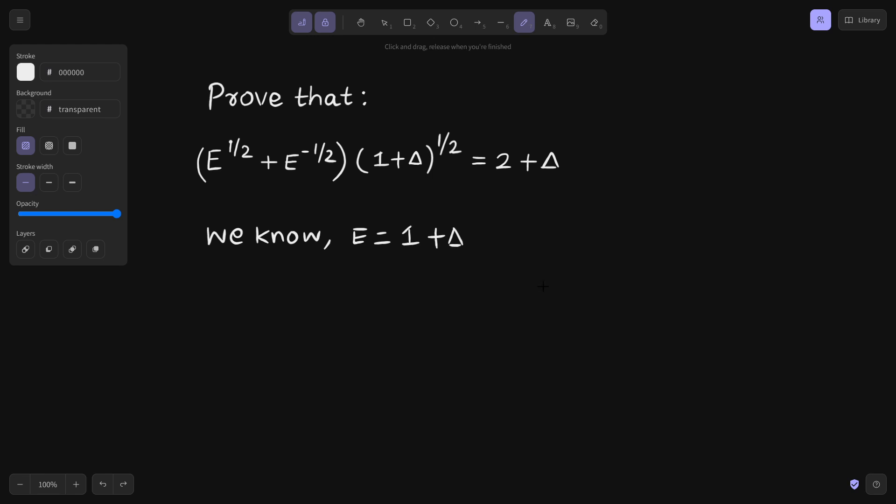So we use this, we can write this as E^(1/2) plus E^(-1/2). 1 plus delta can be replaced by E. This we are working with LHS.